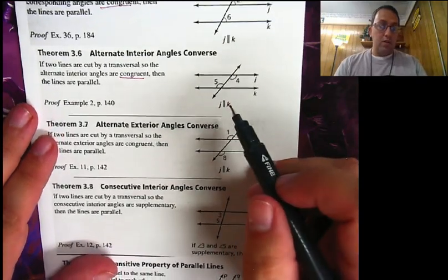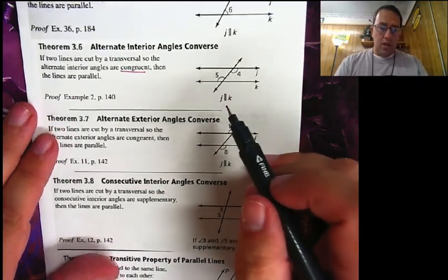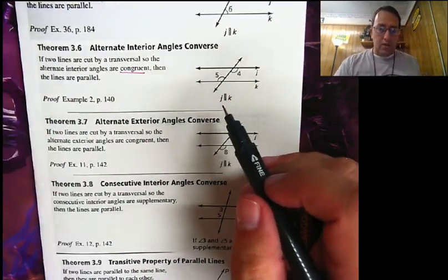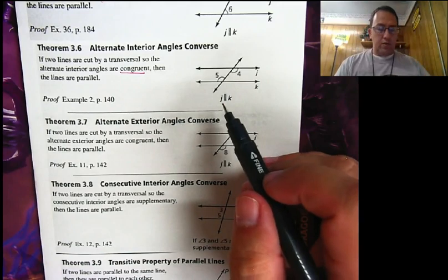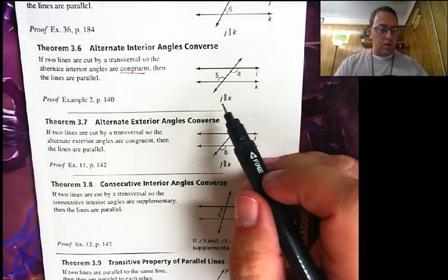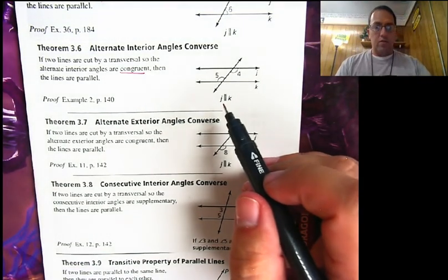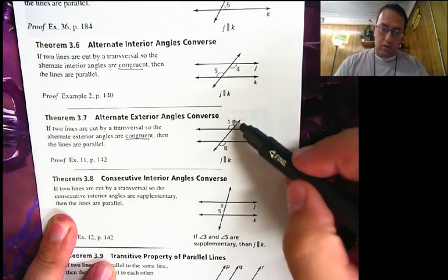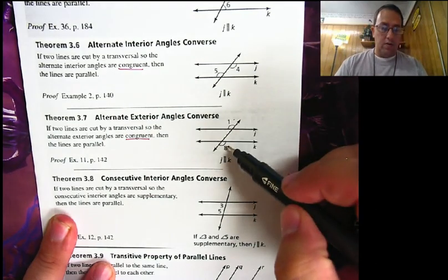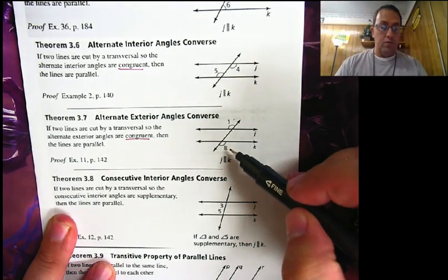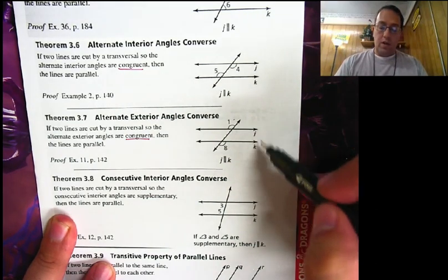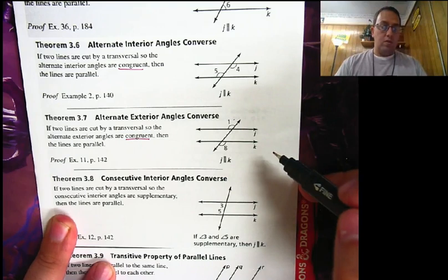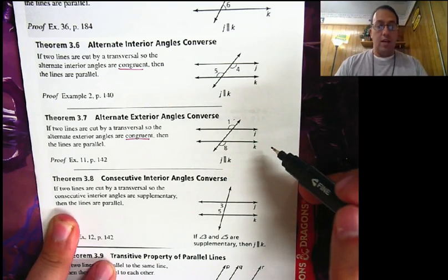Alternate exterior angles converse: if two lines are cut by a transversal so that alternate exterior angles are congruent — so angle one and angle eight are congruent — therefore the lines are going to be parallel. j is parallel to k.